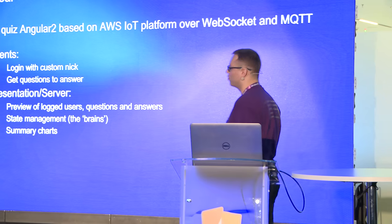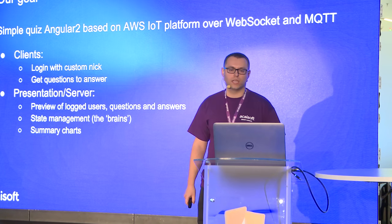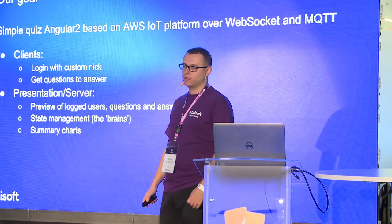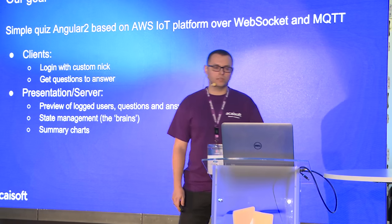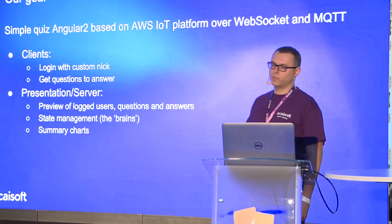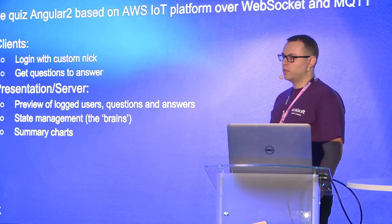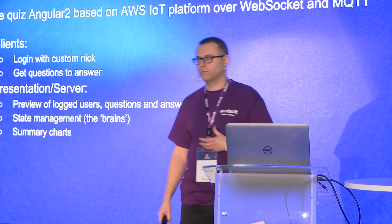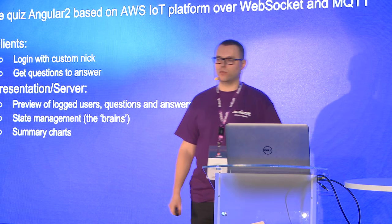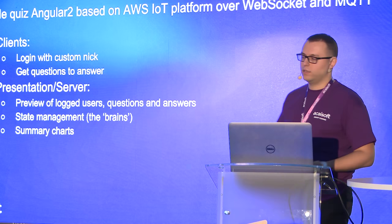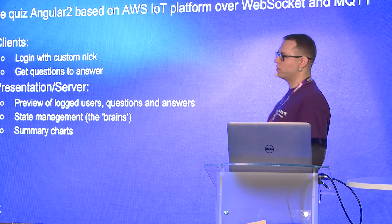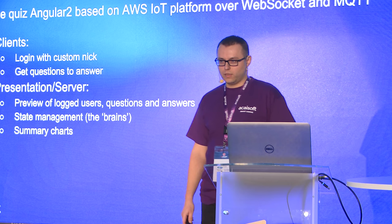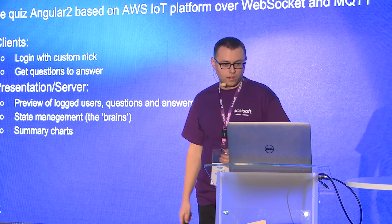Let's discuss what we want to show. The description for the presentation was maybe not that explanatory, and the original idea developed a little bit. What we want to show you is a simple quiz application that is Angular 2 based. We are using the AWS IoT platform, which we connect to over web sockets, and because we need more than just web sockets, we are using the MQTT protocol — which is nicely supported out-of-the-box by AWS. So in theory, this application is back-end-less.